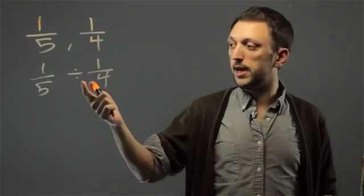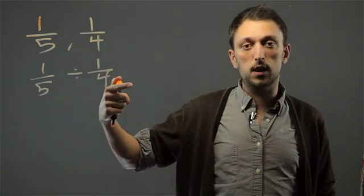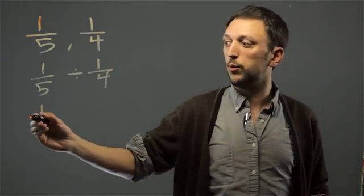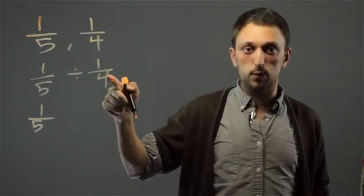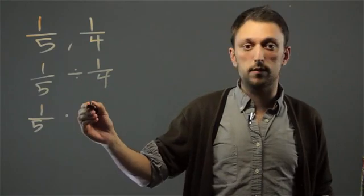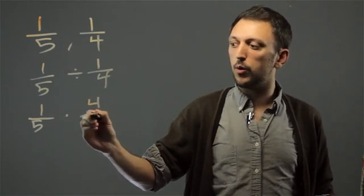the basic rule of dividing fractions is flip and multiply. So 1/5 divided by 1/4 is the same as 1/5 times 4 over 1.